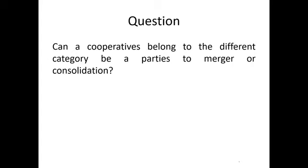Question: can cooperatives belonging to different categories be parties to a merger or consolidation? For example, one is a primary cooperative and the other is secondary — can they merge or consolidate? The answer is no. It is not stated in the law itself, but if you read the implementing rules, cooperatives that belong to different categories cannot enter into merger or consolidation. So primary with primary is allowed, secondary with secondary is allowed, tertiary with tertiary is allowed, but primary with secondary or primary with tertiary is not allowed.